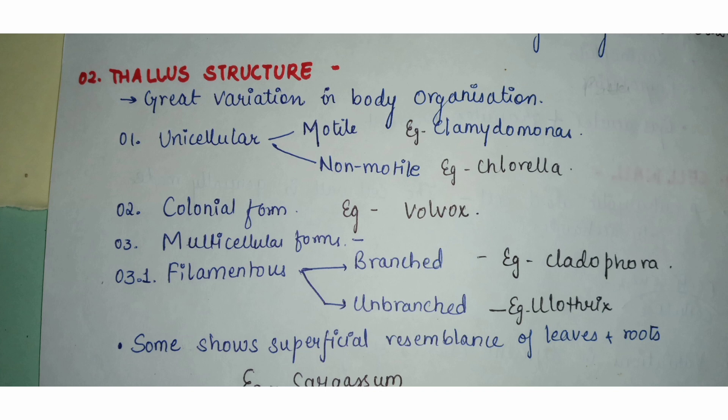That single cell may have flagella or may not have flagella, so they are further classified as motile or non-motile algal forms. The second type is multicellular forms — as the name suggests, these will have a collection of cells, and there would be division of labor where vegetative and reproductive functions are divided.